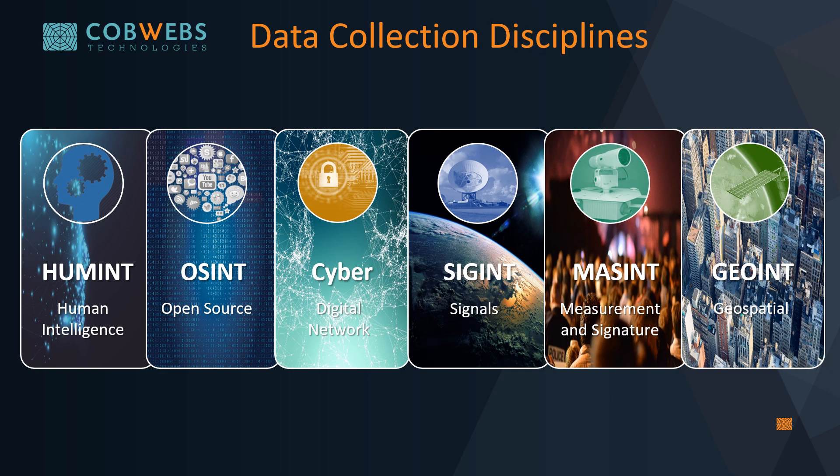Cyber digital network is any information that is collected from the internet and that can't be accessed without credentials. Signals intelligence refers to electronic transmissions that can be collected by ships, planes, ground sites or satellites. Measurement and signatures intelligence is a relatively little known collection discipline that concerns weapons capabilities and industrial activities. Geospatial intelligence is the analysis and visual representation of security-related activities, produced through an integration of imagery, imagery intelligence and geospatial information.